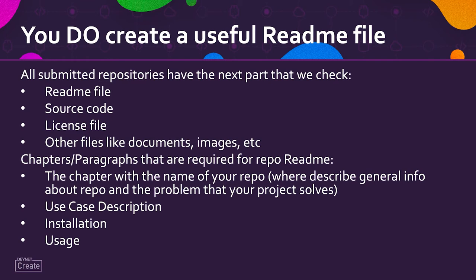All submitted repositories are checked for the following parts: a readme file, source files, a license file, and other files like documents and images. The chapters and paragraphs required for the repo readme include: the chapter with the name of your repo and description, a use case description, and installation and usage instructions.